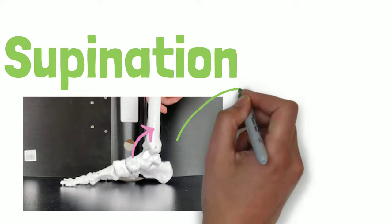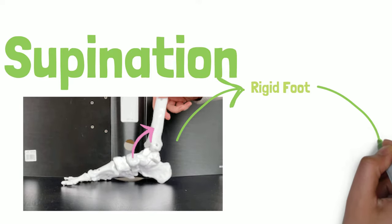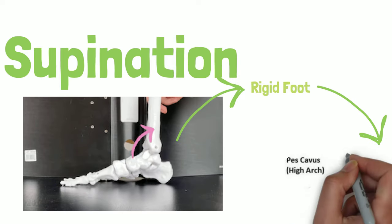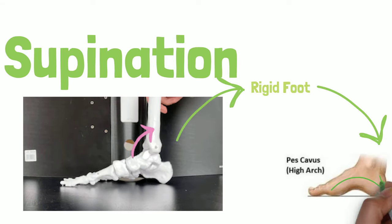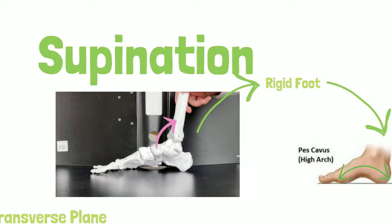Supination is associated with elevation of the medial longitudinal arch and a rigid foot. In extreme cases supination is associated with pes cavus or abnormally raised medial longitudinal arch.